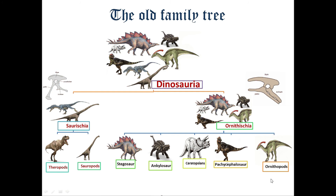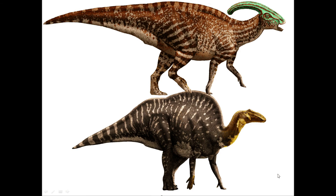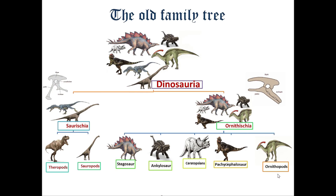Then we have Ornithopods, also commonly called duck-billed dinosaurs, which include hadrosaurs. They were adapted for a herbivore diet, feeding on vegetation. They were facultative quadrupeds — that means they could use their hind legs for running, while when walking they used all their limbs. However, this family arrangement is now considered outdated.